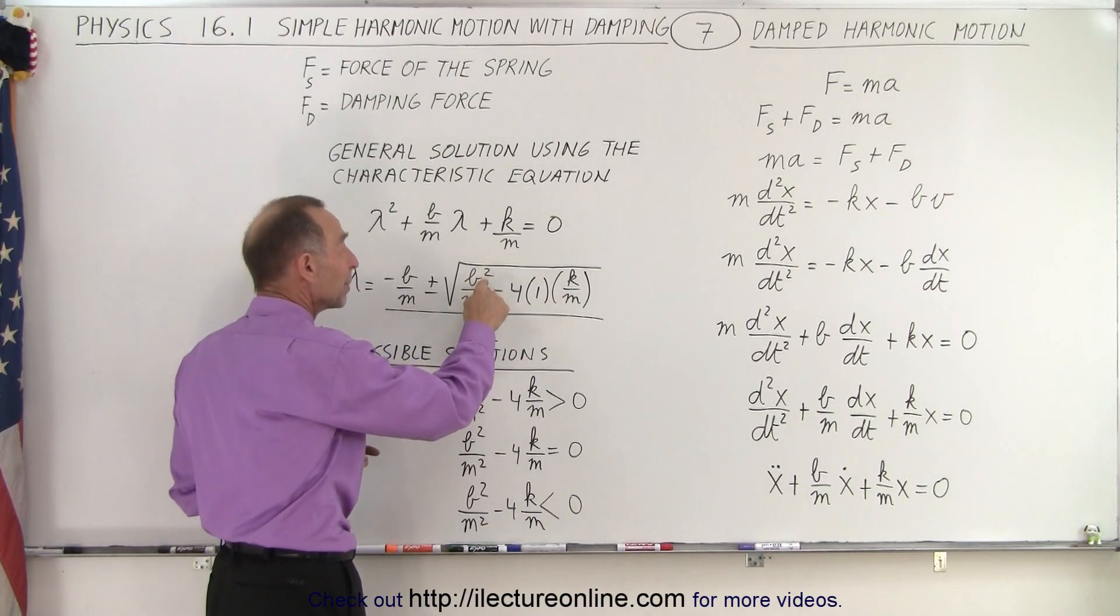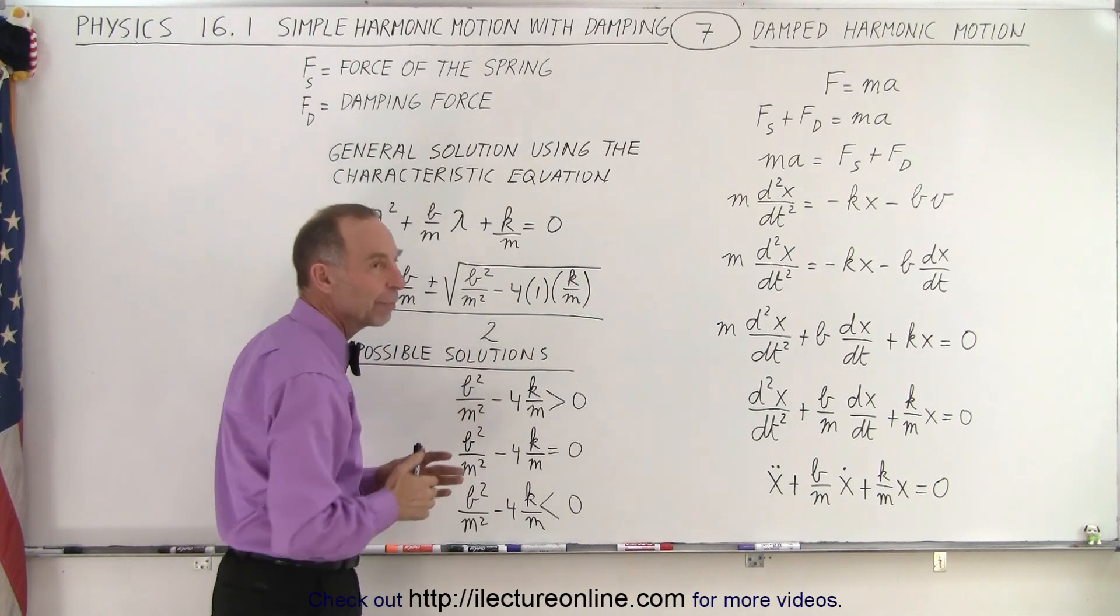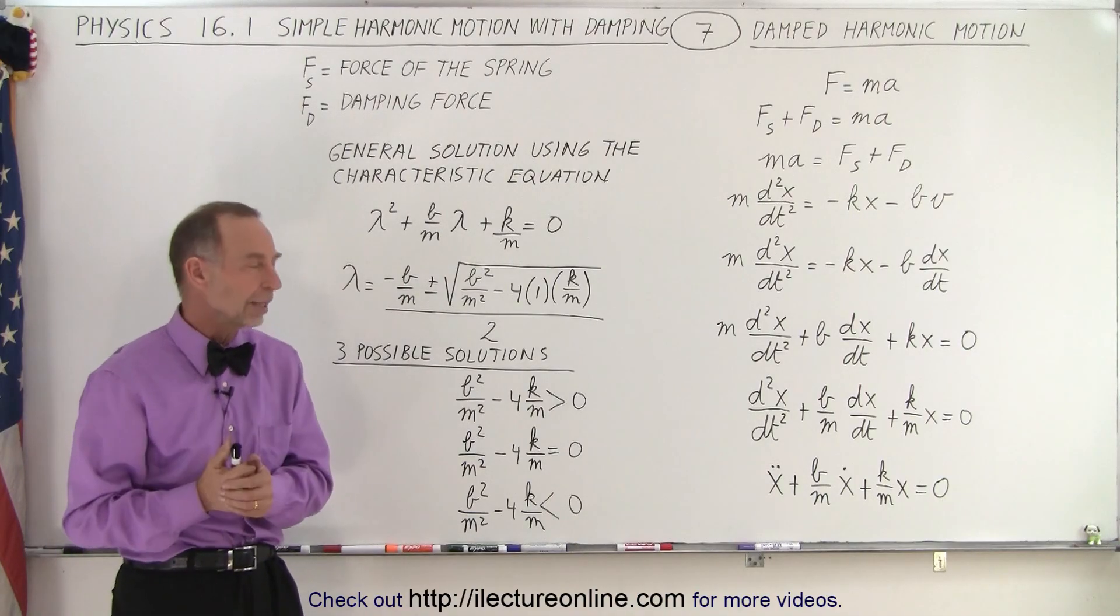depending upon the values for B and the values for K, we're going to have three different possible solutions. And on the next videos, we'll explore what those solutions look like.